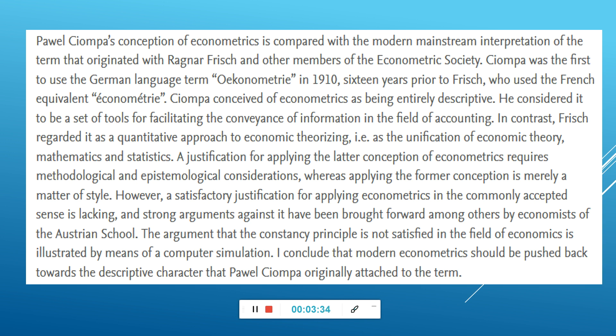However, a satisfactory justification for applying econometrics in the commonly accepted sense is lacking, and strong arguments against it have been brought forward, among others, by economists of the Austrian school. The argument that the constancy principle is not satisfied in the field of economics is illustrated by means of computer simulation. The conclusion is that modern economics should be pushed back toward the descriptive character that Pavel Siompa originally attached to the term.